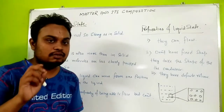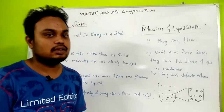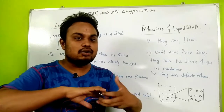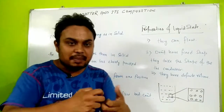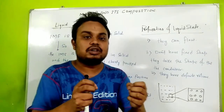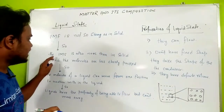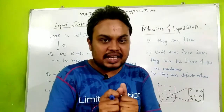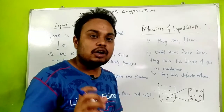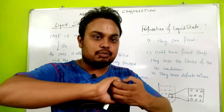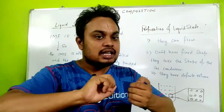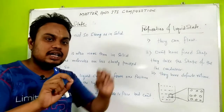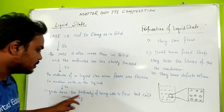Now for liquid — remember one concept: the intermolecular force of attraction in liquid is not as strong as in solid. Since the intermolecular force of attraction is weaker, the intermolecular space is more than in solid — it was nearly absent in solid, but in liquid it increases. The molecules are less closely packed, and the molecules of a liquid can move from one position to another. Therefore, liquid has the property of being able to flow.